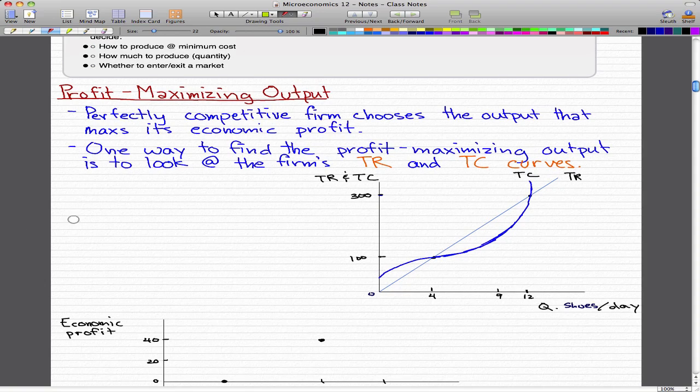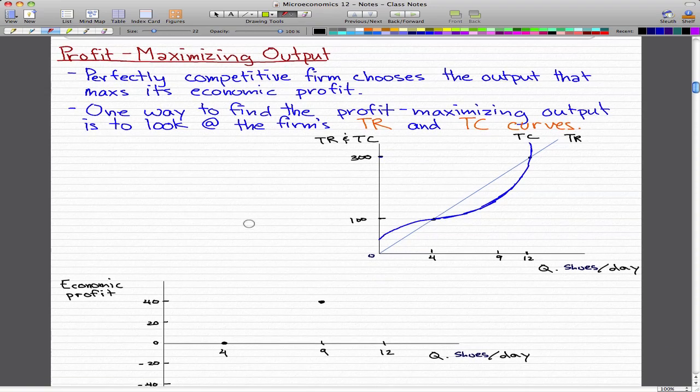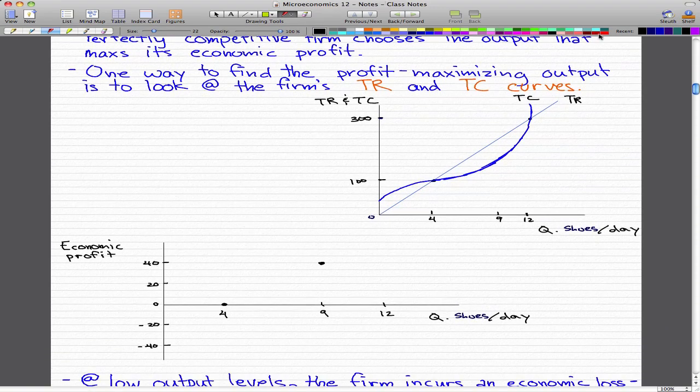So what we want to find here is economic profit. And doing that is actually really simple, so let me pick a color here. How we find it is we pretty much just take the amount of the total revenue and minus the total cost amount. So total revenue minus total cost is economic profit or economic loss.